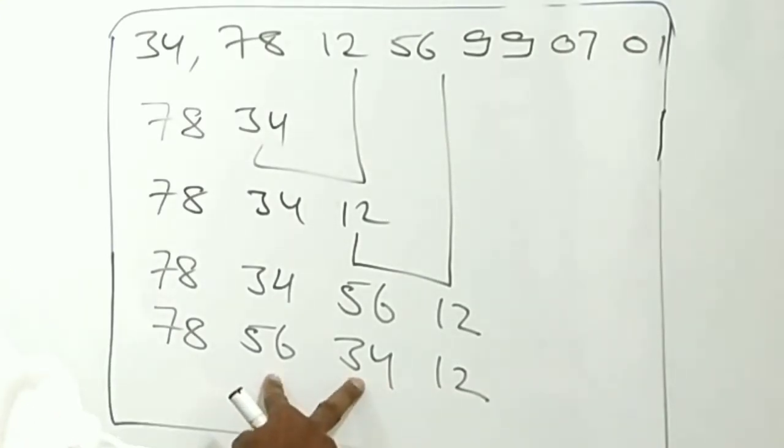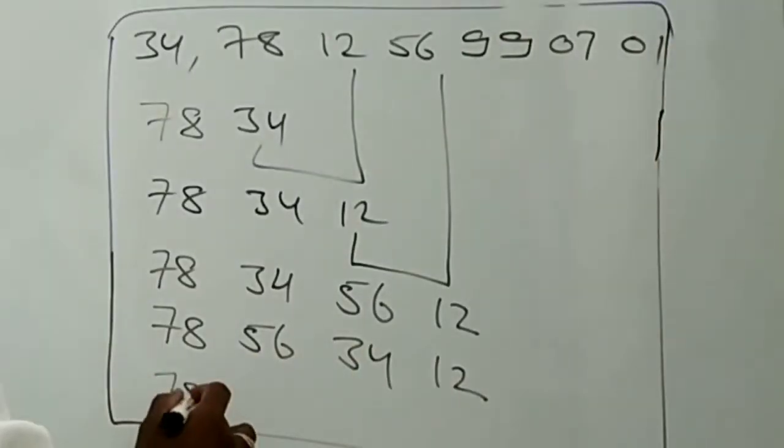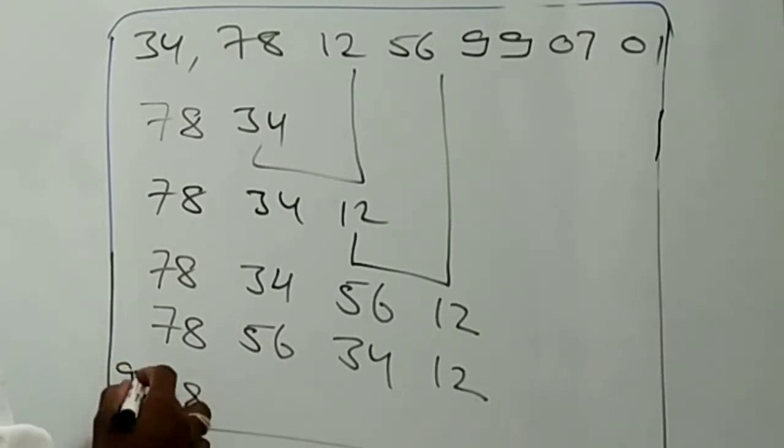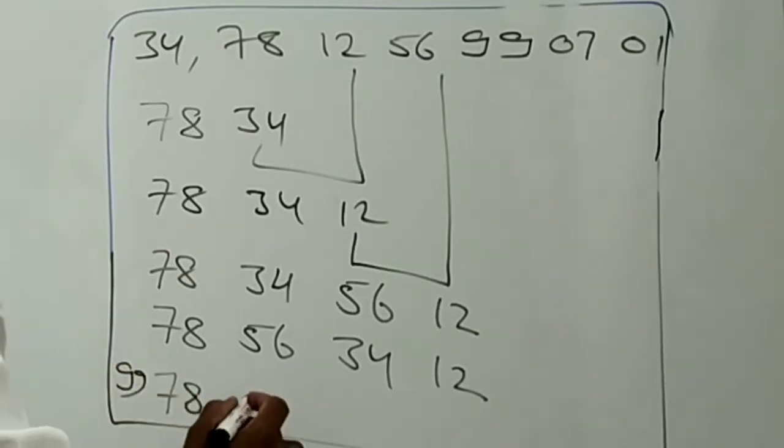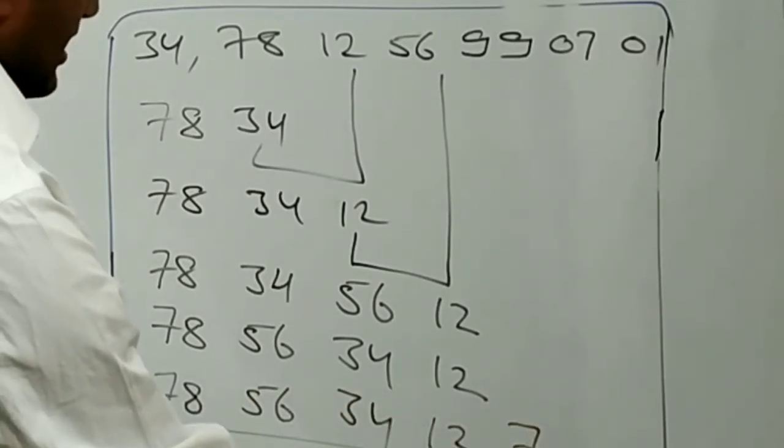And again we have to compare with the previous number and the previous number. Now you can see 78 is greater than 56, it is greater than 34, it is greater than 12. Like that you compare with all the numbers. And finally we will get 78, sorry 99, 78, 56, 34, 12, 7 and 01.